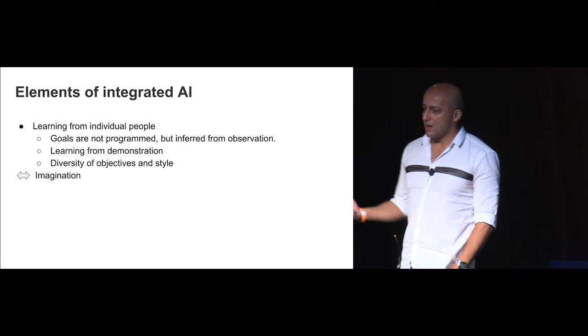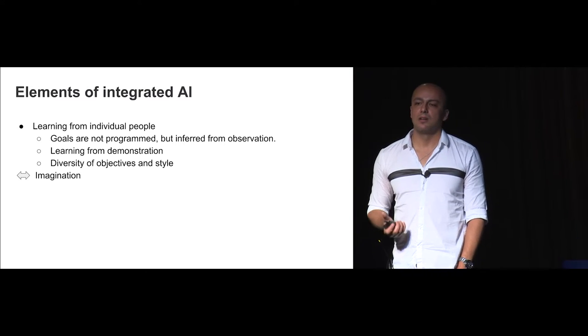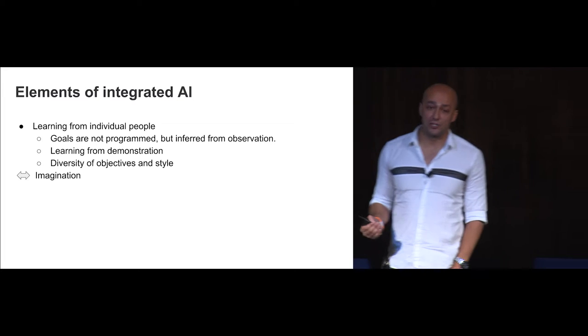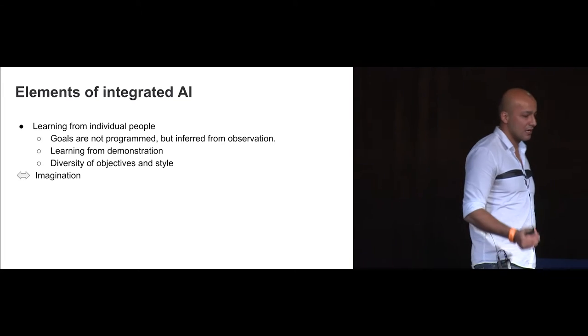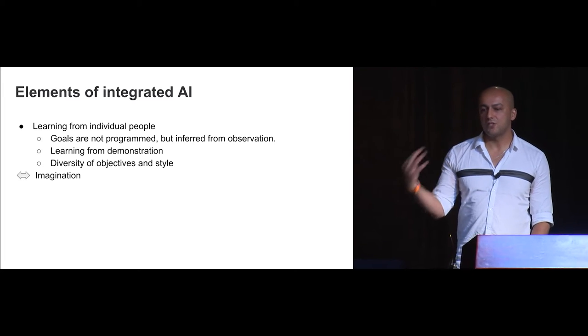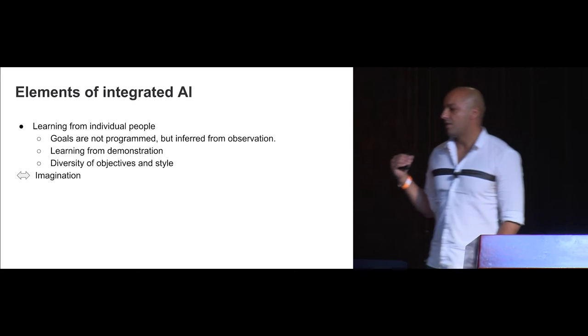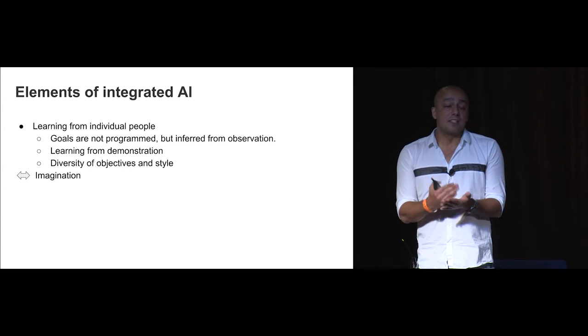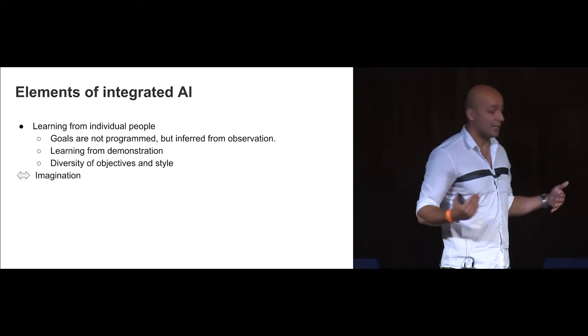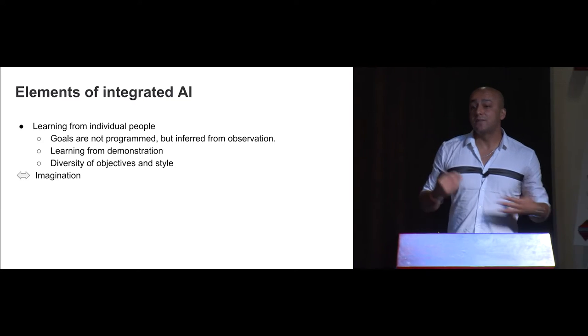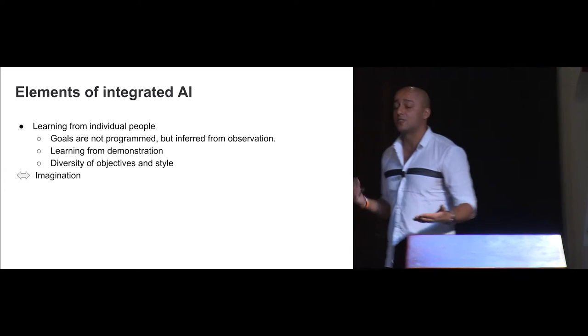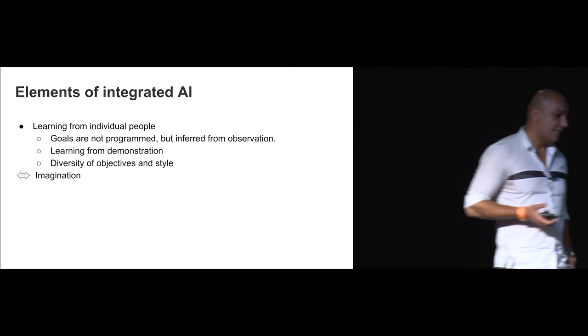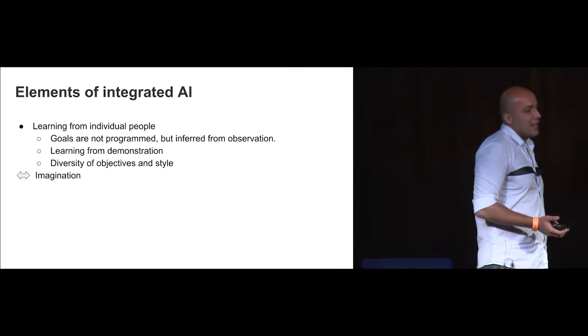And there's one core problem that, if we can solve, enables us to do this, and that's the problem of imagination. If we can create imagination, it means we can understand how to create different things under different contexts just by a small number of data. So for example, you just met me right now. And just by meeting me right now, you can imagine me in different clothes. You can imagine me dancing. You can imagine me doing all sorts of things. And that's an amazing power that you have. And that power is at the center of what will enable integrated AI.